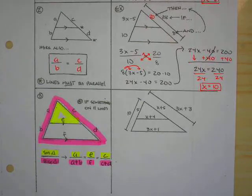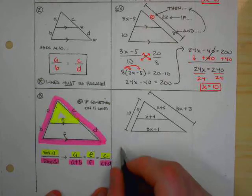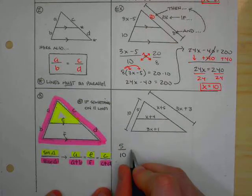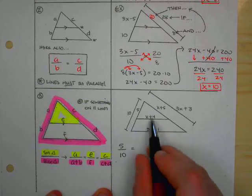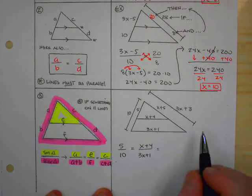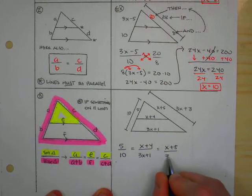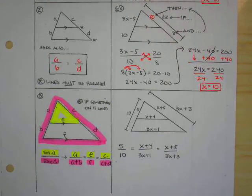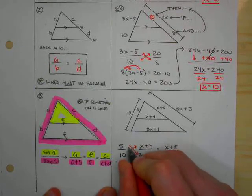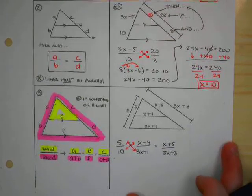So, if I were going to set up a proportion, or I could even do an extended proportion here if I wanted to, what I would end up with is 5 over 10, right? A divided by A plus B, 5 over 10, equals my E and my F would be X plus 4 over 3X plus 1. And my C and my D would be X plus 5 over 3X plus 3. Now, the first thing I want to do is I want to solve for X. I'm going to use these two fractions, or this proportion right here, to figure out what X is equal to. Move this up just a little bit so it's easier for you to see.